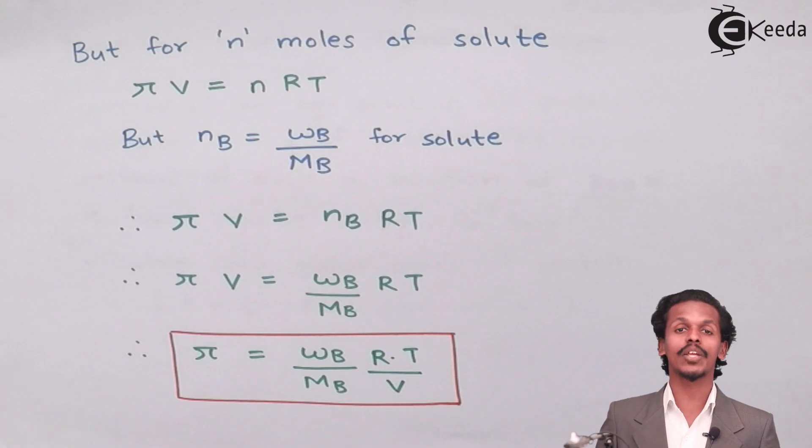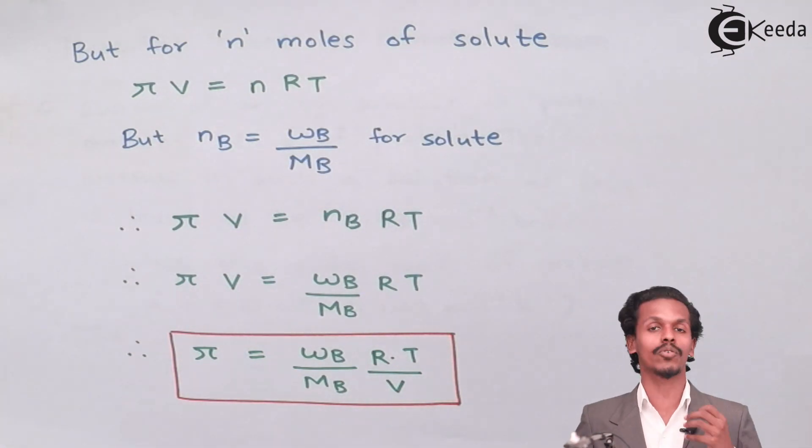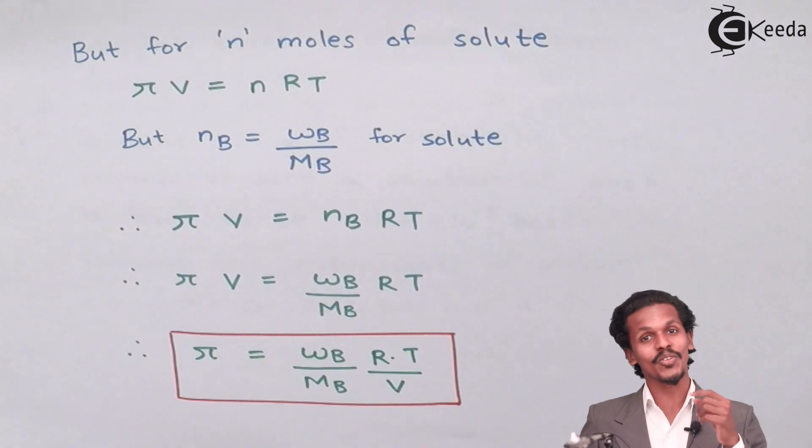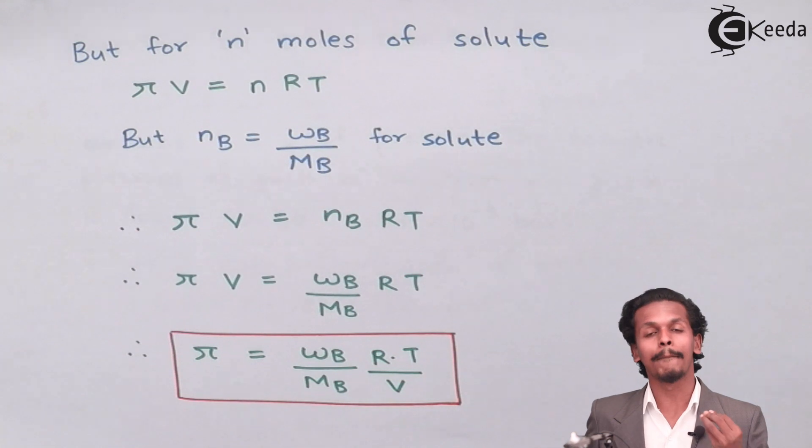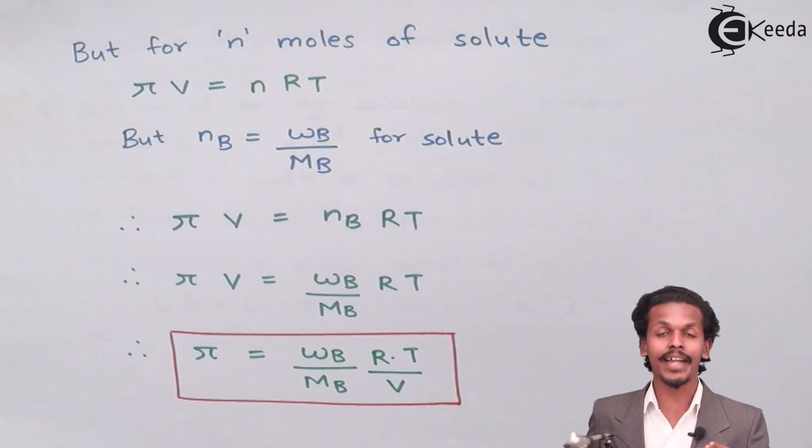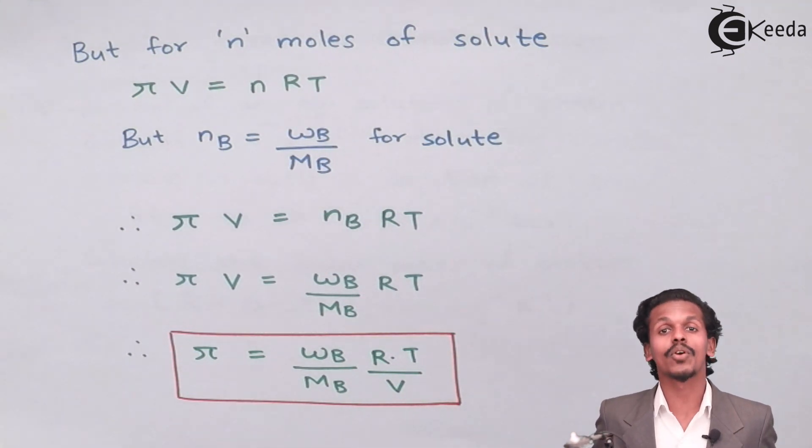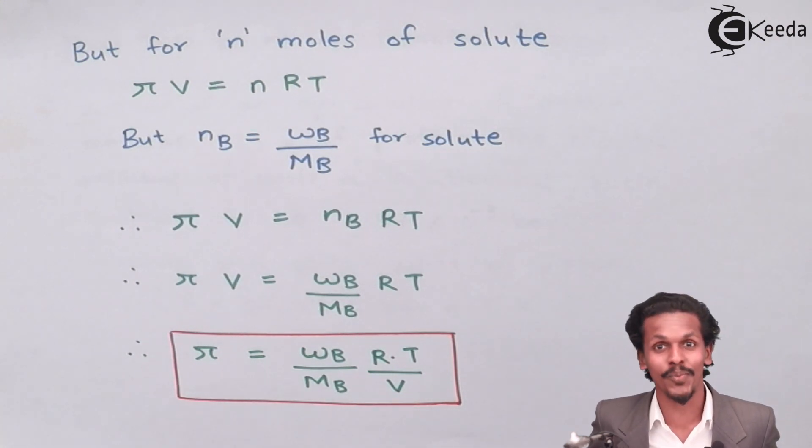This is the final equation that we have derived for the colligative property of osmotic pressure. I hope you have liked this video and got an idea how to derive an equation based on osmotic pressure and the molar mass of solute. Don't forget to share this with your friends and subscribe to egida.com.